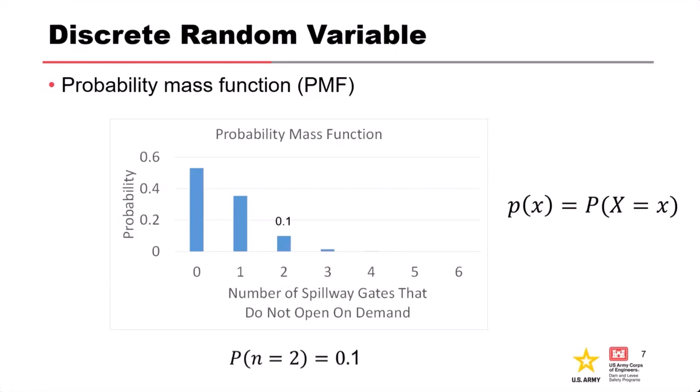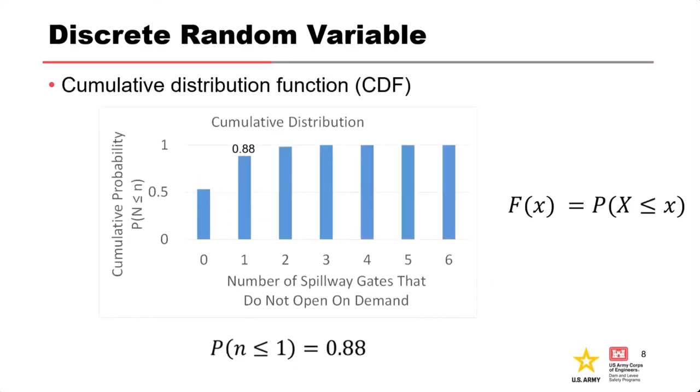For example, what's the probability that two gates don't open? It's just the height of the bar on this bar chart. These are usually portrayed as bar plots or column plots. In this example, the probability would be 0.1. The probability is the probability that the random variable equals that specific value.